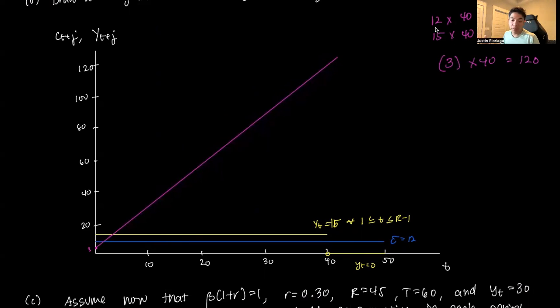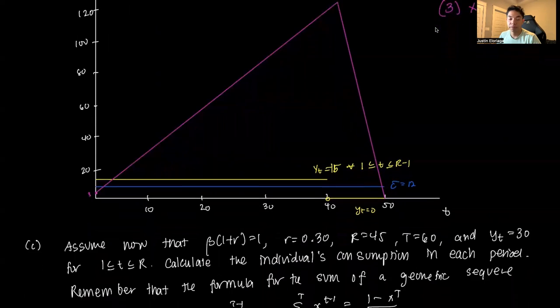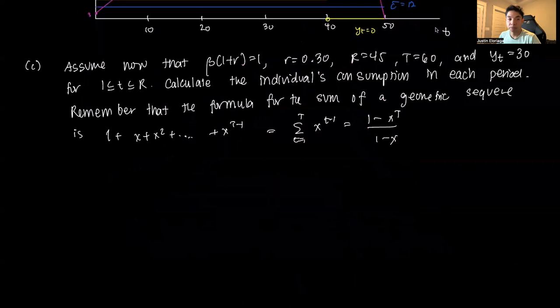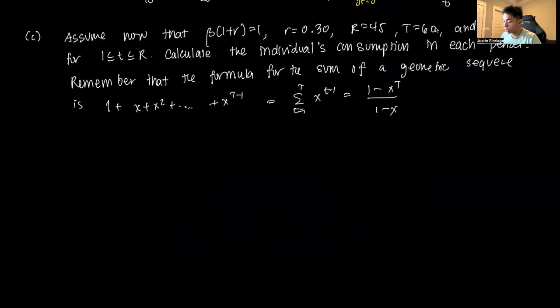Because you do not earn income after period 40, you have to dis-save. You basically fund yourself based on the savings you accumulated over time. This eventually reaches 0 at period 50. That's the consumption and savings diagram.